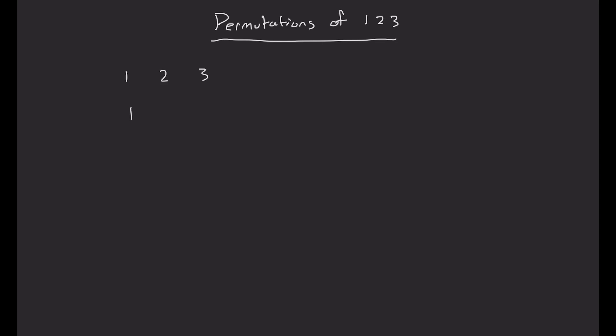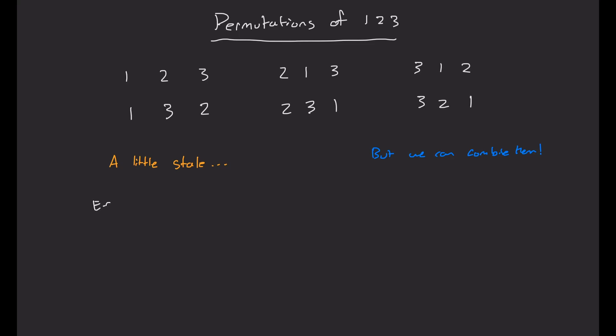I'm sure you can easily list out all the permutations of the set {1, 2, 3}. By itself, this is a little dull, but did you know that we can actually combine them? We can multiply permutations to get another permutation.